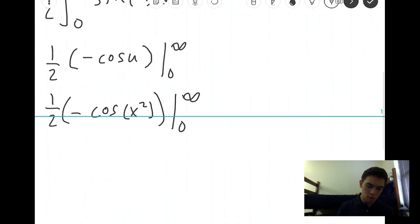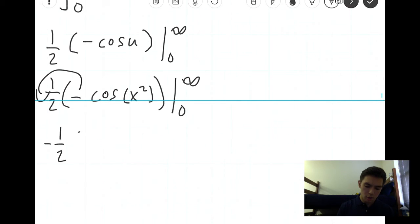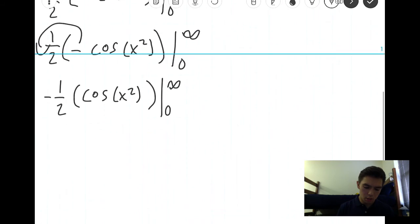And lastly, I'm also going to pull this negative one half out. So we have negative one half cosine x squared evaluated on the interval from zero to infinity. And now we just plug in these points.